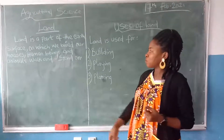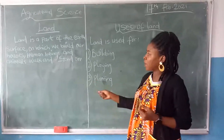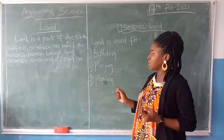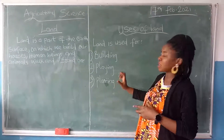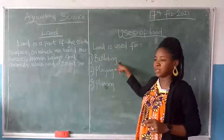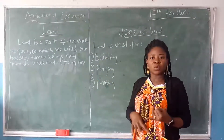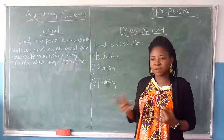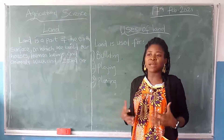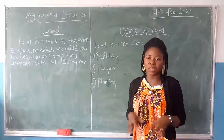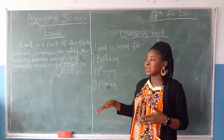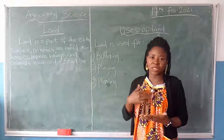Like we said earlier, we build our houses on the land and human beings walk and stand on it. The first use is building. Our buildings — our schools, our homes, houses, offices, so many of those buildings — we do them on the land. They are being built on the land. You cannot build your house elsewhere; it must stand on the land.